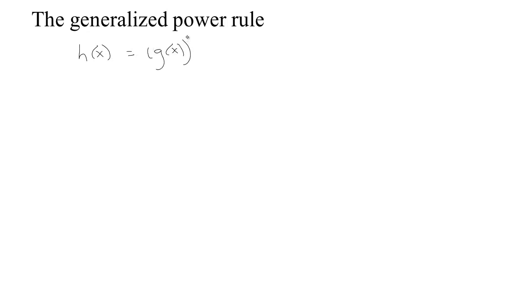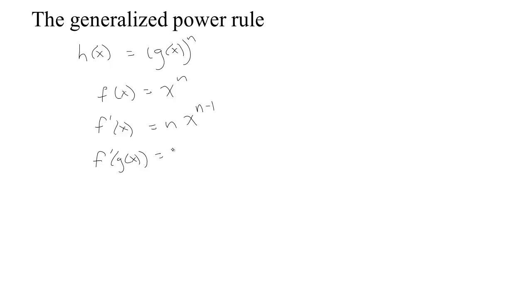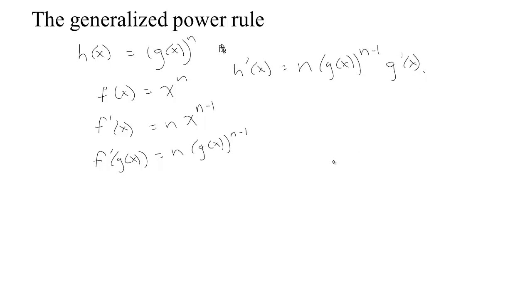Now there's kind of a pattern here that you'll notice arising. Anytime your composition is some function raised to a power — in other words, the outside function is a power function — we know the derivative of the outside is going to be n times x to the n minus 1. So the derivative of the outside evaluated at the inside, which is what the chain rule says to do, is going to be n times the inside to one power less. The derivative of this composition gives us the derivative of the outside evaluated at the inside, times the derivative of the inside. This is sometimes called the generalized power rule.